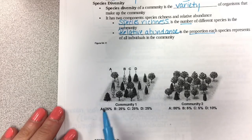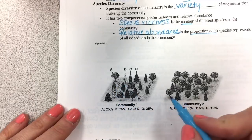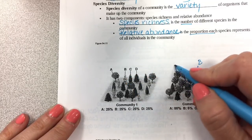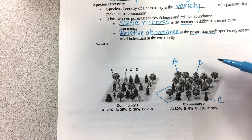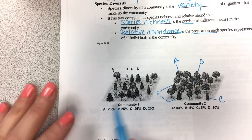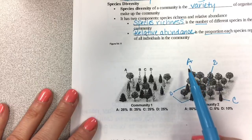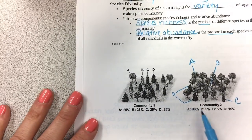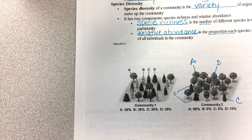If we look at these communities, they're labeled species A, B, C, and D. This community has one B, these are all A's, this is a C, this is a C, and these two are D's. If we look at the diversity, they're not equal. They have the same number of different species — the same species richness — both having A, B, C, and D. But look, the proportion of each species is not the same.